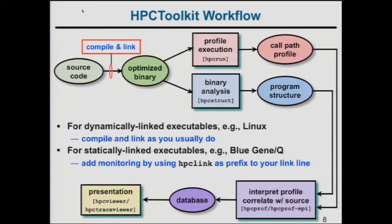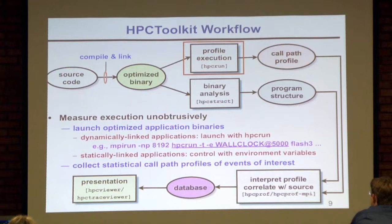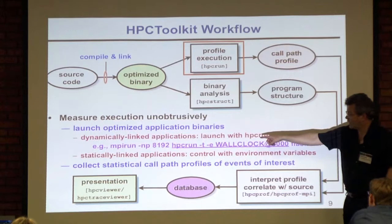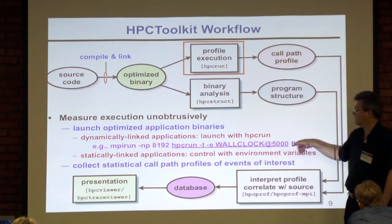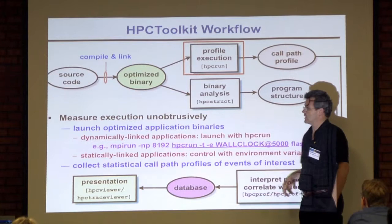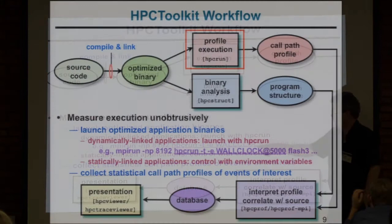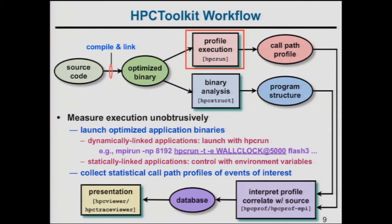Once you have your dynamically linked executable, launch it with our hpcrun tool. Here's an example using hpcrun with MPI: we're launching Flash 3, specifying the event — wall clock at a period of 5,000 microseconds — and collecting a trace. Just insert that into the middle of your MPI run command. For statically linked applications, you set the events in environment variables instead.